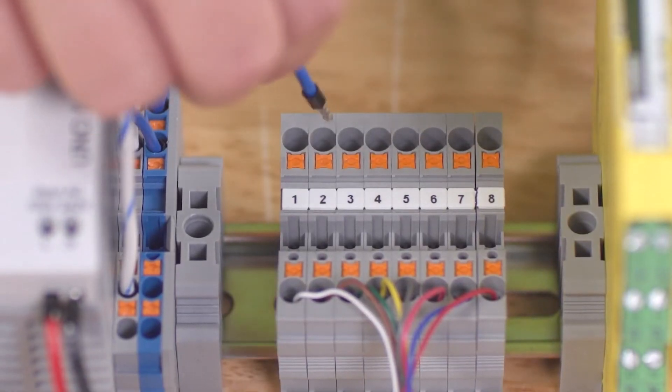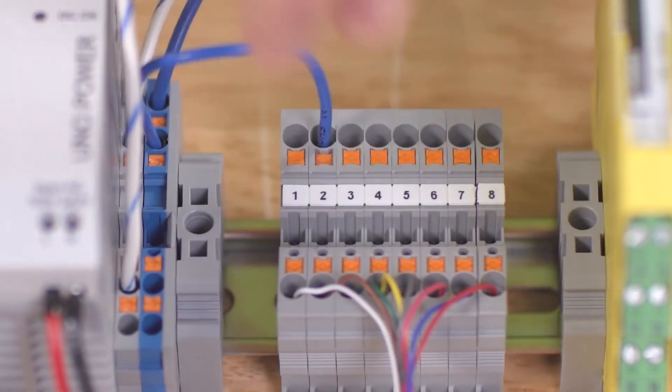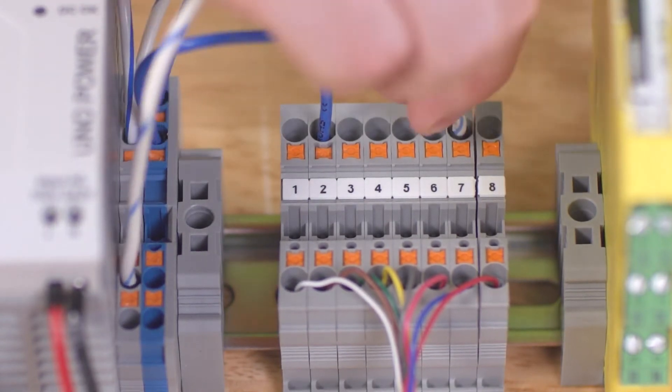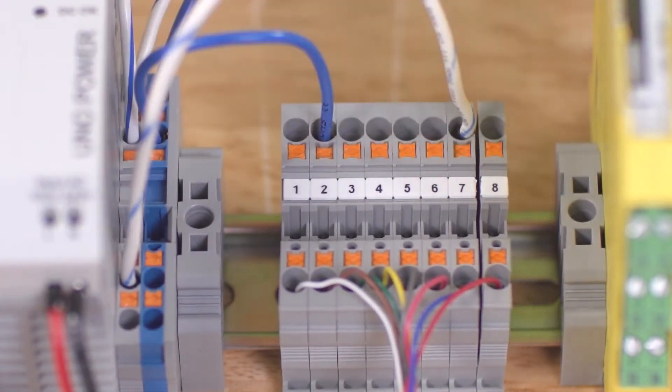First, we'll connect pins 2 and pin 7 to 24 volts and 0 volts DC respectively. These are the power connectors for the switch system.